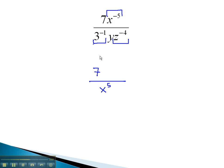Looking at the denominator, 3 to the negative 1 means we need to move that 3 to the numerator. Now it's 3 to the positive 1. The y does not have a negative exponent, so it can stay in the denominator. z to the negative 4th, however, must move to the numerator, making the exponent a positive 4.